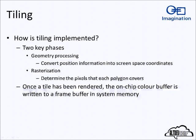We do this in two phases. We convert all the geometry into screen-space coordinates so we can tell where it'll be on screen, making it easier to split into tiles — that's stored in the parameter buffer. Then we do the actual rasterization to see exactly which pixels are affected by a polygon. At the end, once a tile has been rendered, we write the color buffer out to system memory so the display hardware can put it on the screen.